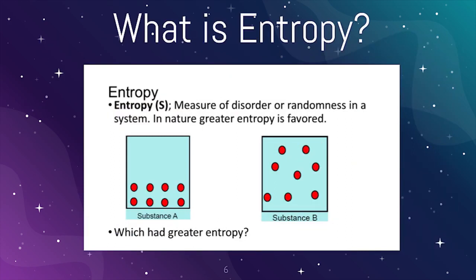To understand the second law of thermodynamics, we're going to need to know what entropy is. Entropy is the measure of disorder or randomness in a system. In nature, greater entropy is favored.